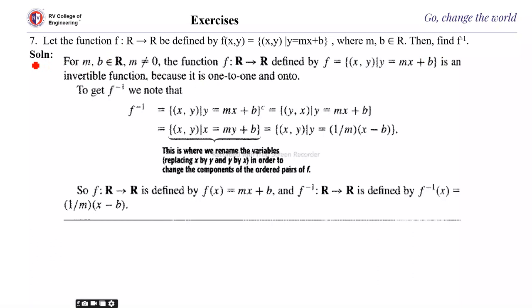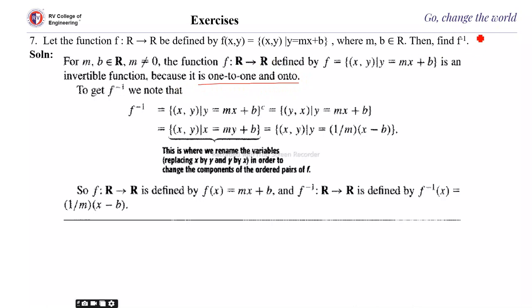Here is the solution. For m, b belonging to R, if m is not equal to 0, then the function defined by f = {(x, y) : y = mx + b} is an invertible function. When m = 0, the inverse does not exist. That is why we require m ≠ 0 — only then is it an invertible function, because it is one-to-one and onto. Since the function is one-to-one and onto, we can find the inverse.